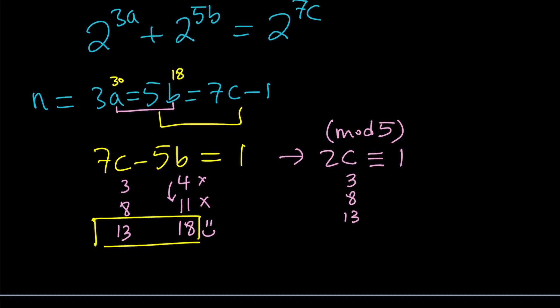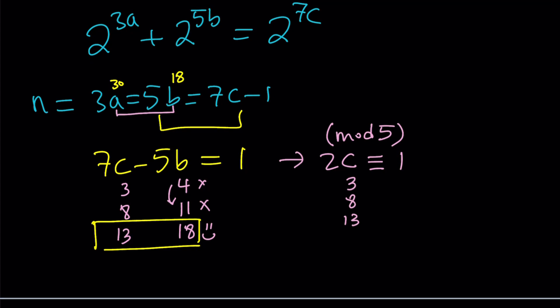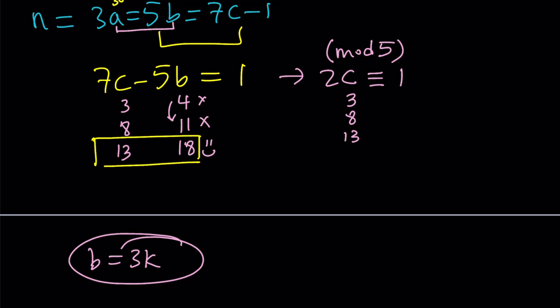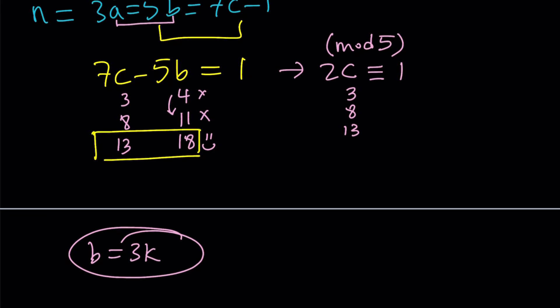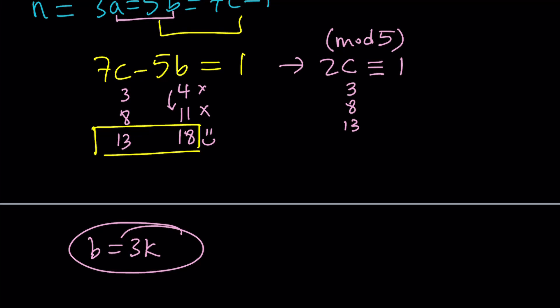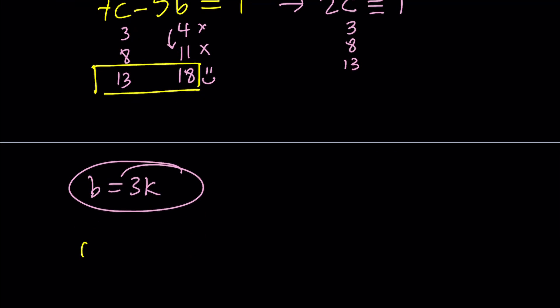In this problem originally, it was asking for the minimum value of a plus b plus c, even though we could find pretty much all solutions because there are infinitely many solutions. Okay, so let's go ahead and write the minimum values. So, from here, I'm getting minimum positive values, of course. a is going to be 30, b is going to be 18, and c is going to be 13.